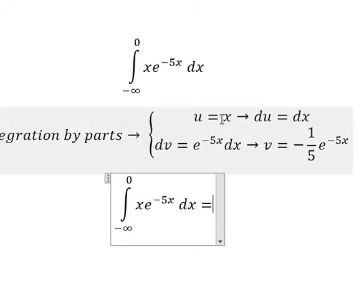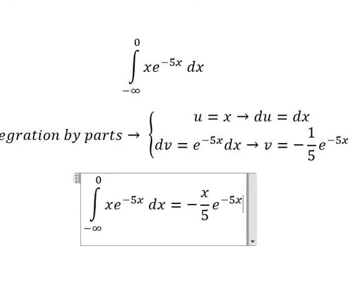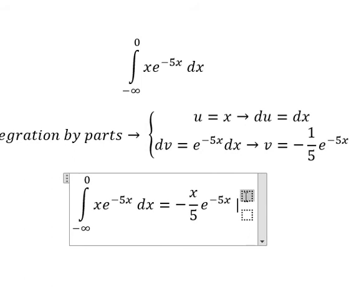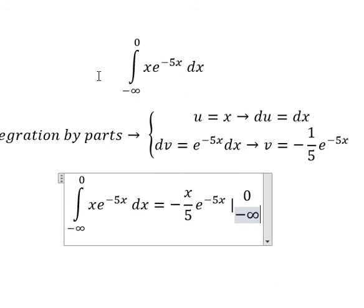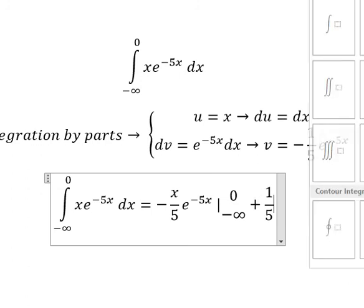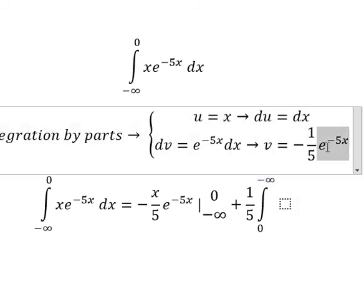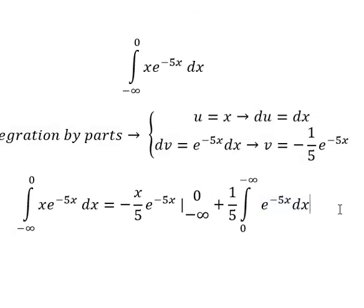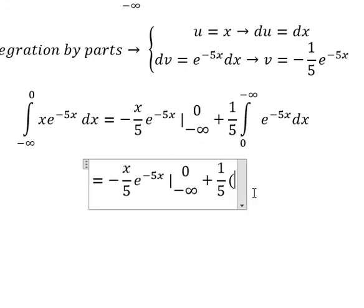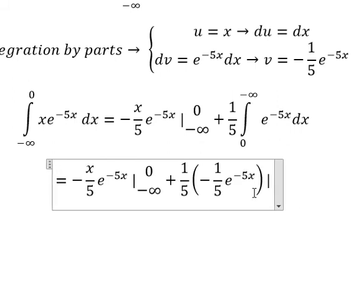So this one we have u multiplied with v, and we put the bounds in here. We put positive 1 over 5 because we have the negative, that's why this one should be positive. And we have this with x, so this one we get negative 1 over 5 e to the power of negative 5s, and we put the bounds in here.